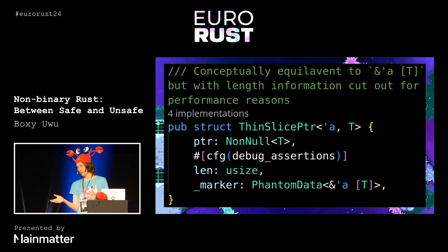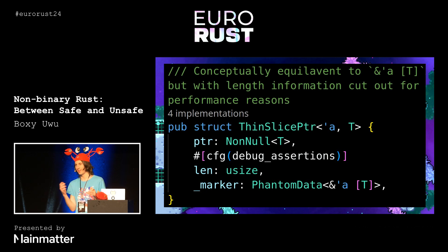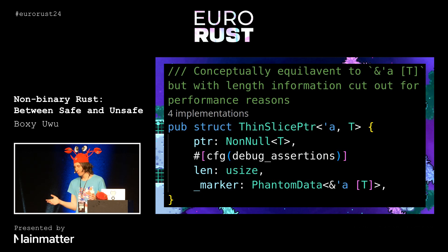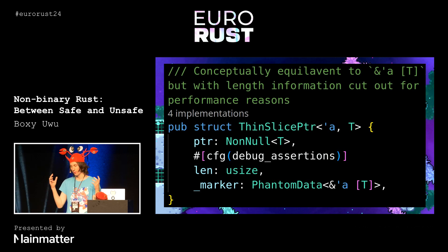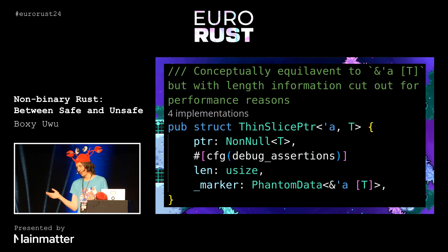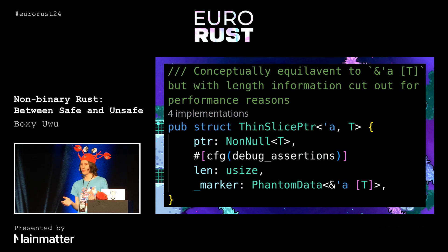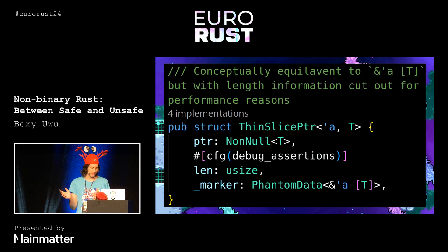Whereas now in debug mode we actually have a length field, and because there's a single function to do all the indexing, we can just assert it and know that we're always asserting it correctly. The phantom data in this example is very simple because we know exactly what we're doing — it's just a reference to a slice.